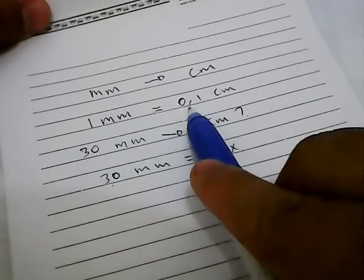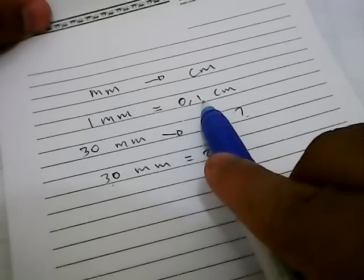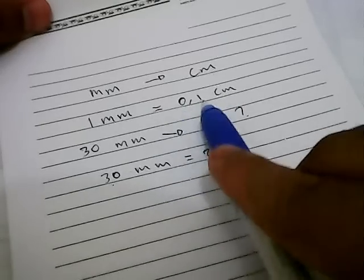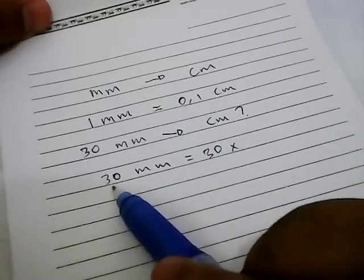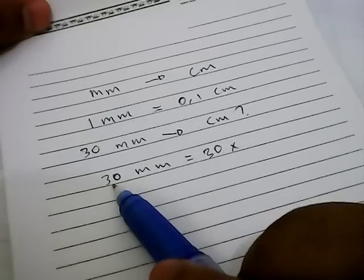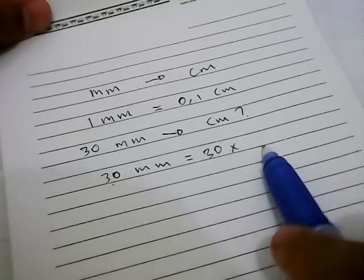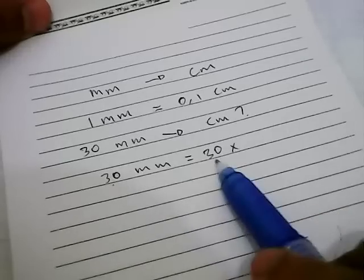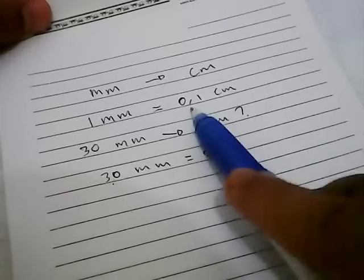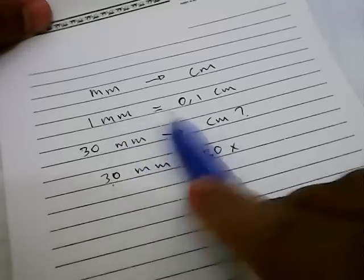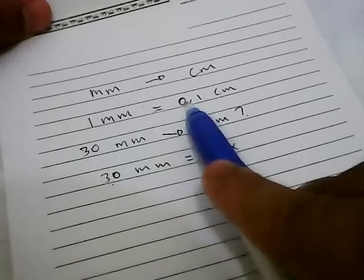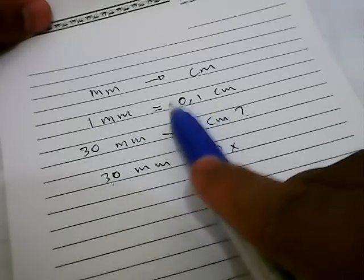In this example, we want to convert 30 millimeters into centimeters, so this 30 needs to be multiplied by this number. We need to multiply by 0.1. Let's go ahead and multiply: 30 times 0.1 centimeters.